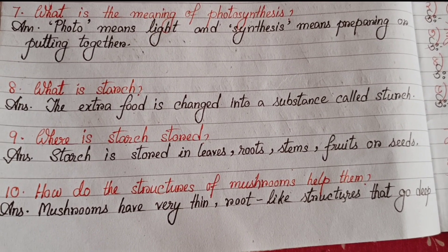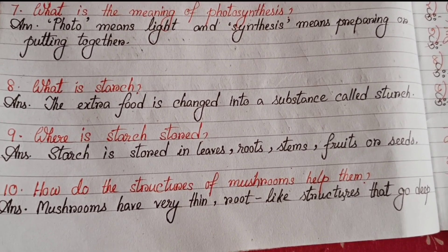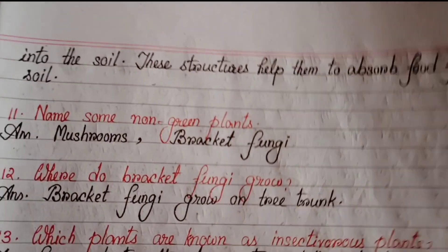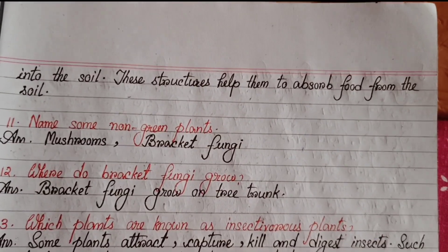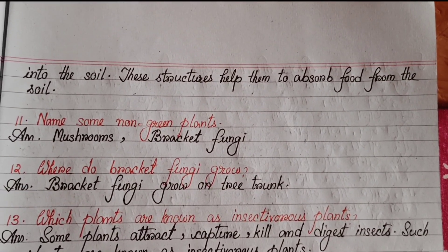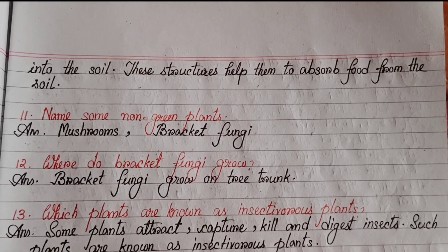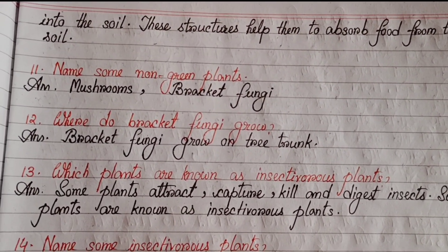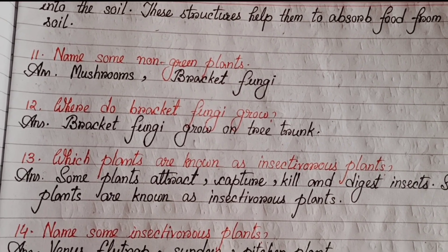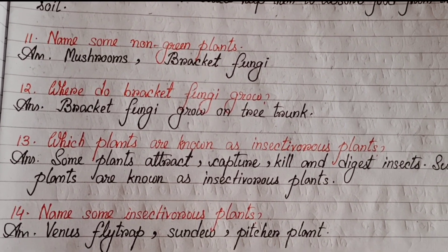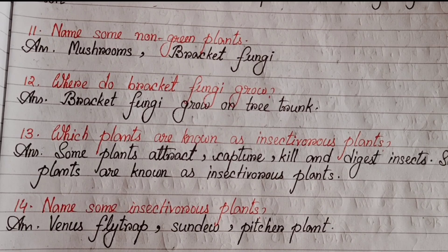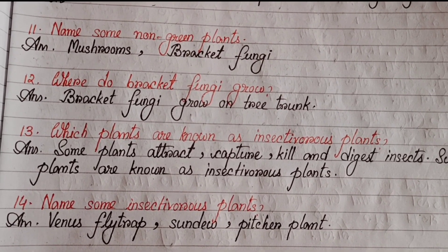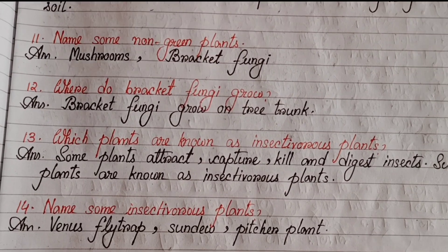Number ten: How do the structures of mushrooms help them? Mushrooms have tiny root-like structures that go deep into the soil. These structures help them to absorb food from the soil. Number eleven: Name some non-green plants — mushrooms, bracket fungi. Number twelve: Where do bracket fungi grow? Bracket fungi grow on tree trunks.